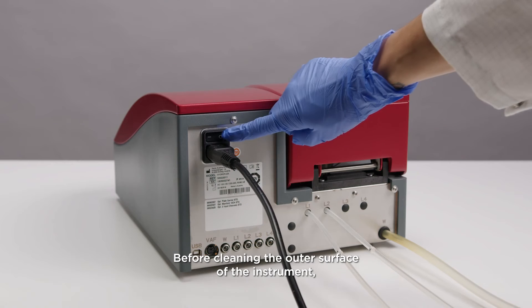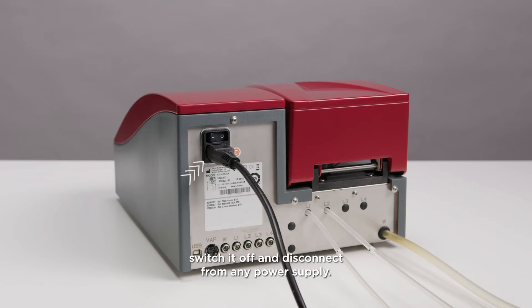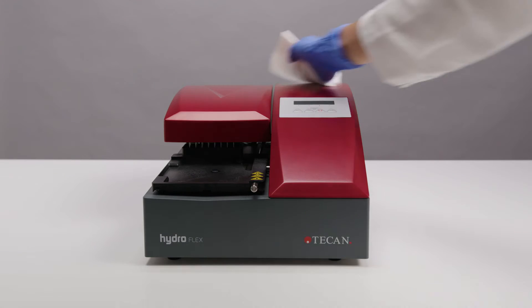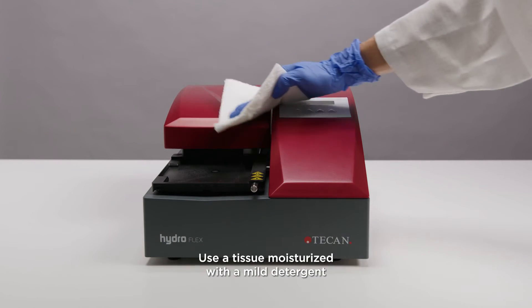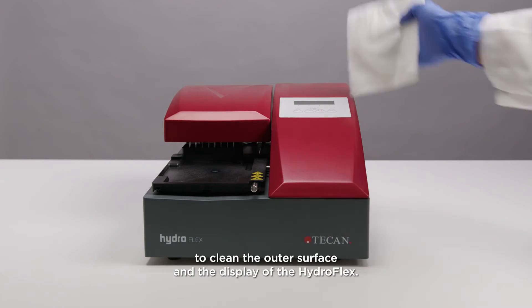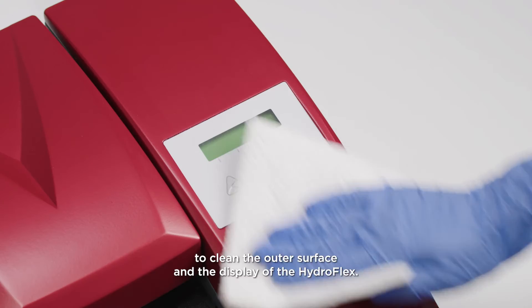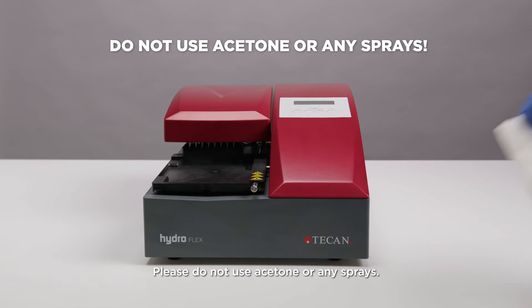Before cleaning the outer surface of the instrument, switch it off and disconnect from any power supply. Use a tissue moisturized with a mild detergent to clean the outer surface and display of the HydroFlex. Please do not use acetone or any sprays.